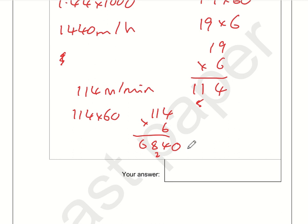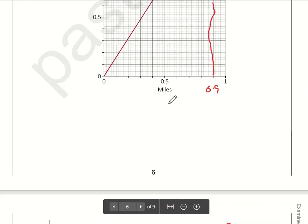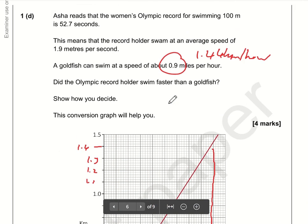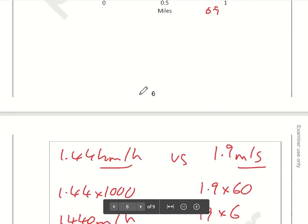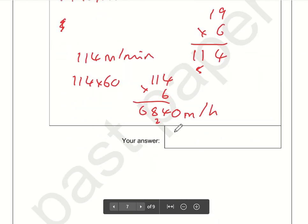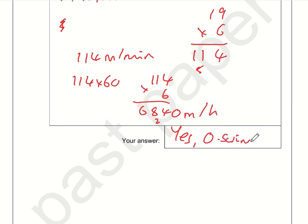The Olympic swimmer will do 6,840 metres in an hour, whereas the goldfish can only do 1,440. Did the Olympic record holder swim faster than the goldfish? Yes, he did. The Olympic swimmer is faster.